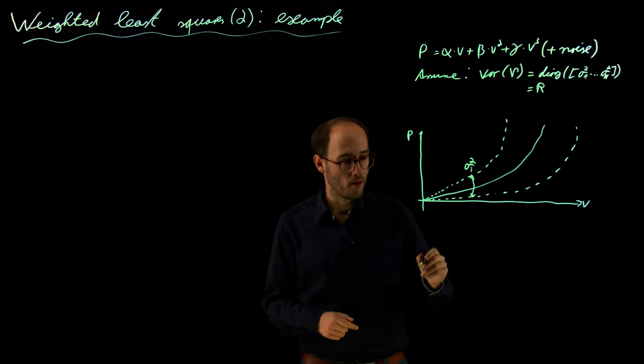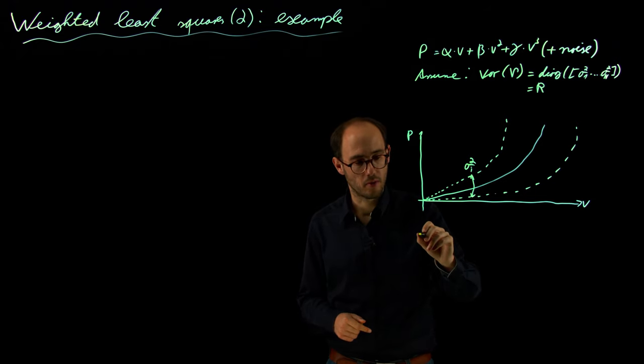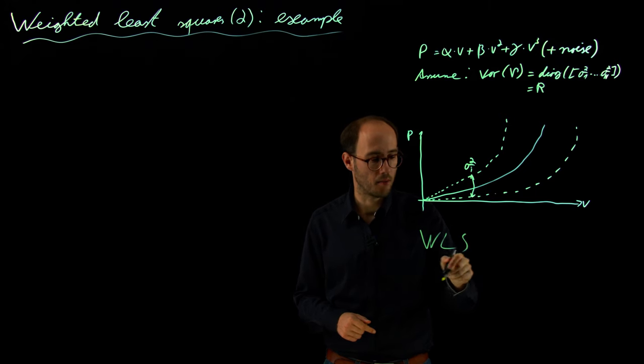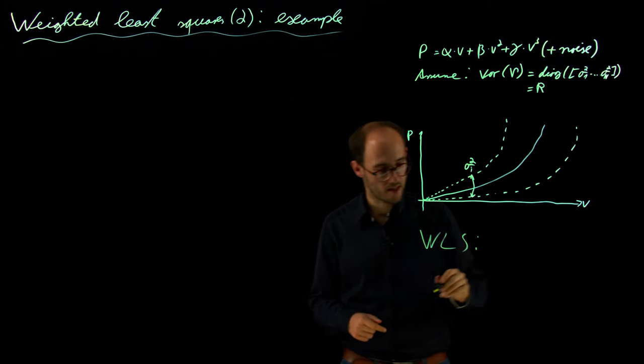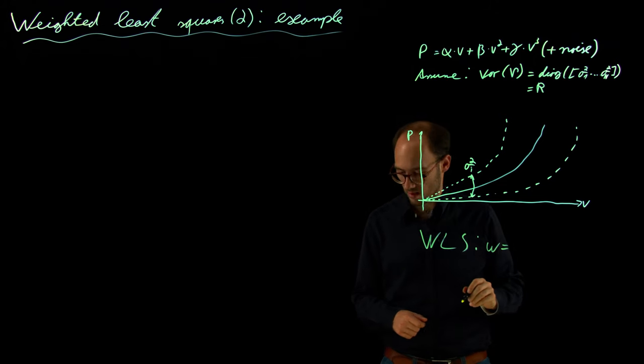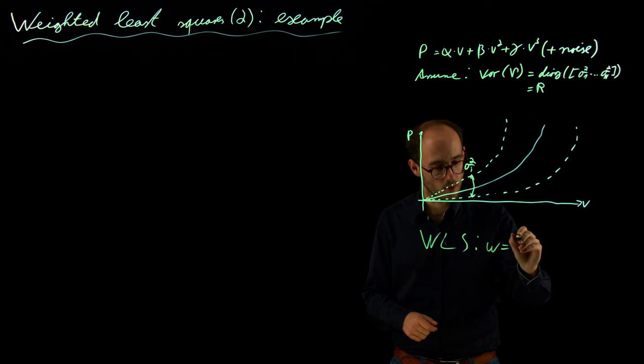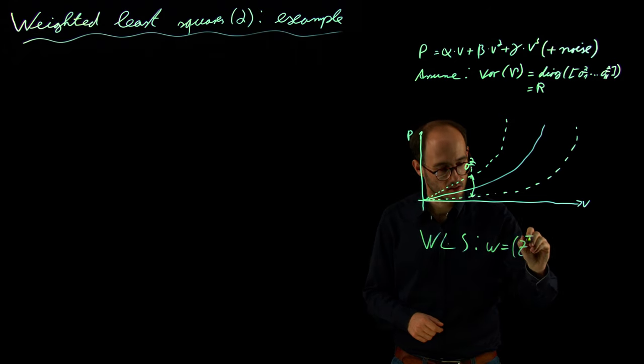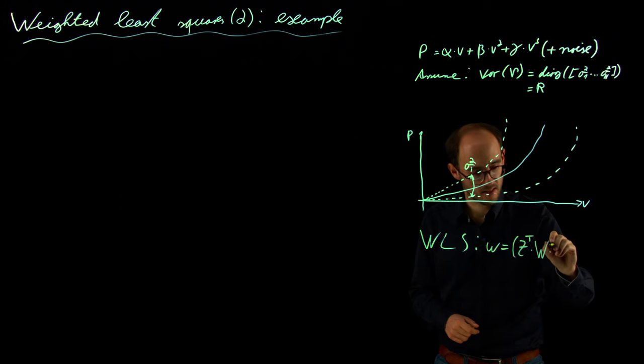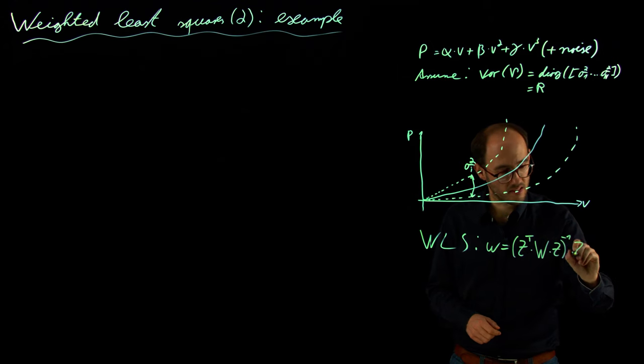And what have we learned from the last video? Just repeat it very quickly. So we have learned that the WLS, the weighted least-squares, is basically similar to the ordinary least-squares but different where W is Z transposed times our weighting matrix Z times Z inverse times Z transpose times W times Y.